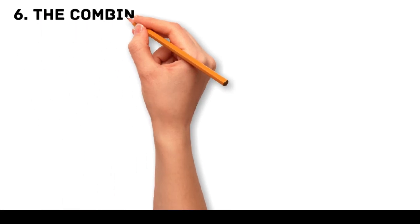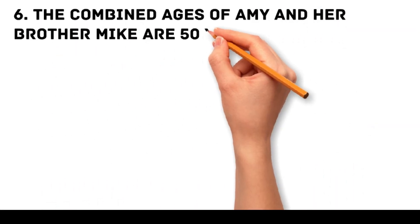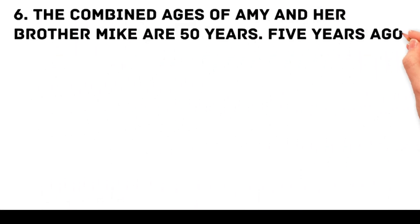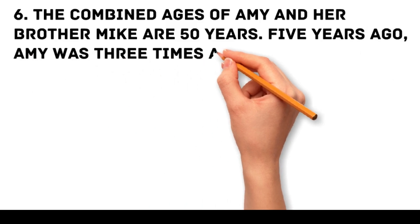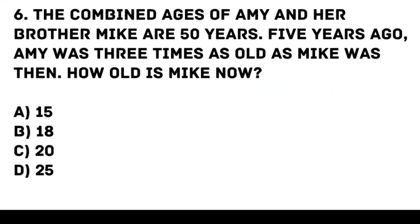Problem 6. The combined ages of Amy and her brother Mike are 50 years. Five years ago, Amy was 3 times as old as Mike was then. How old is Mike now? A. 15, B. 18, C. 20, D. 25.